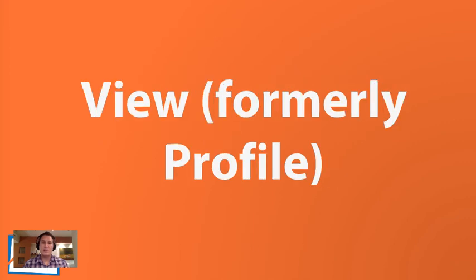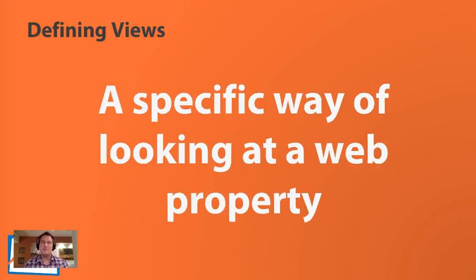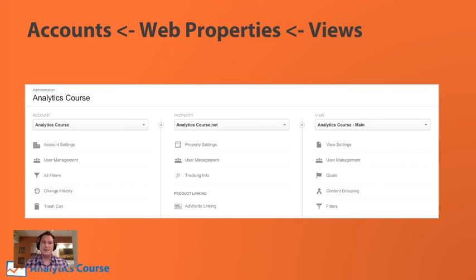A view is basically for each web property — you can have multiple views. These used to be called profiles, so if you've been using Google Analytics for a while, that's what they were called. A view is just a specific way of looking at the data that comes in for your web property. Views are where the filters are applied, so each view may have a set of filters to ensure you have the best quality data. An account can have up to 50 properties, and each property can have up to 25 views.